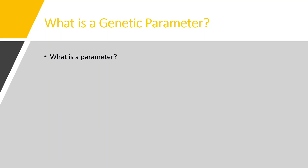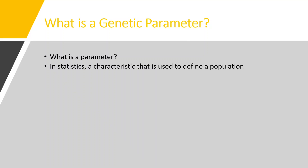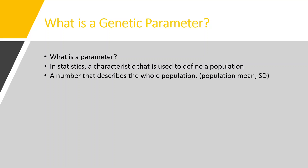Parameter is a general term which has different meanings in different subjects or fields. In terms of statistics, a parameter can be defined as a characteristic that is used to define a population. We can also define a parameter as a number that describes the whole population, like population mean, population standard deviation, or population variance — numbers which describe the whole population.